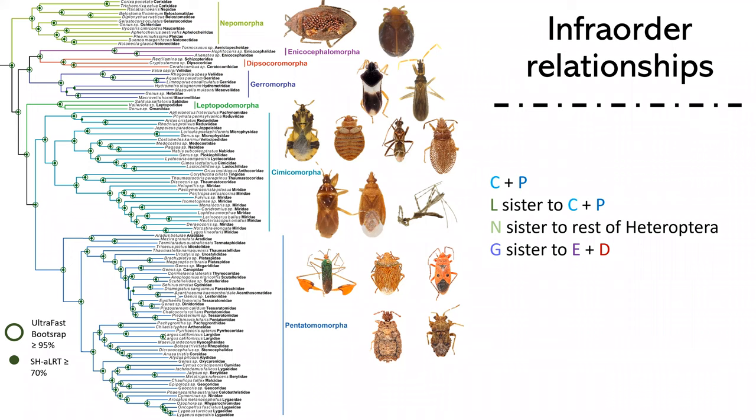Of note is that Nepomorpha is sister to the rest of Heteroptera. And then Gerromorpha is sister to Aenochocephalomorpha and Dipsocoromorpha.